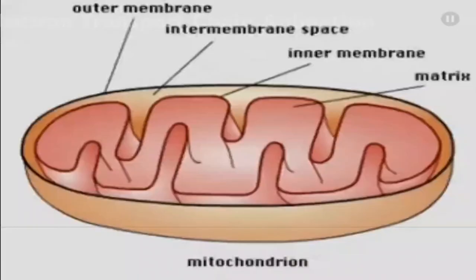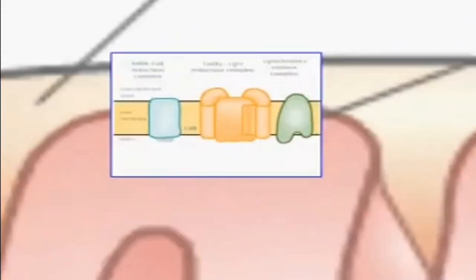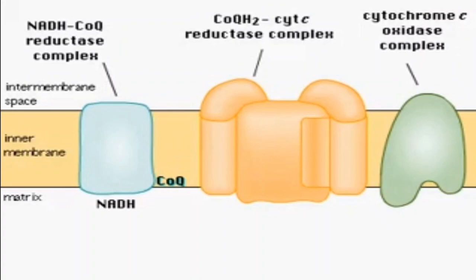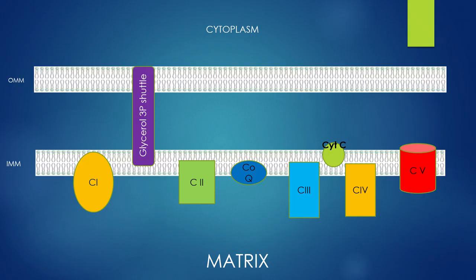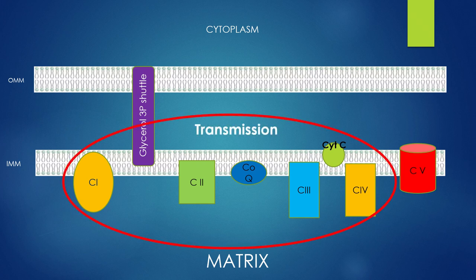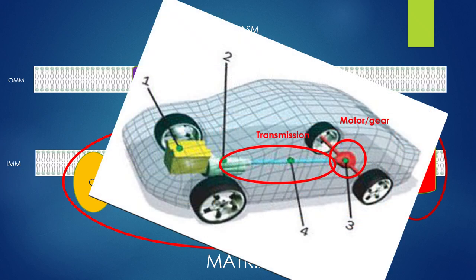Let's talk about the mitochondria. In the mitochondrial membrane, you will see different machines — different complexes from C1 to C5 — like an engine of a car. They are divided into a transmission and a motor, and these two are coupled. When coupled, they work to produce energy, like a car transmission coupled with the motor to make the wheels move and produce energy of motion.